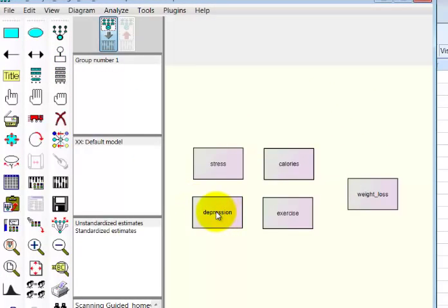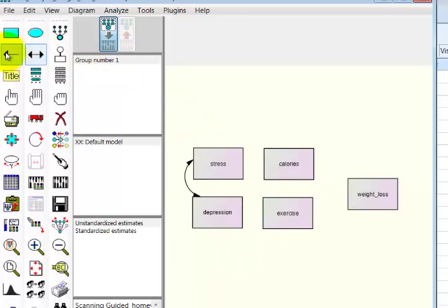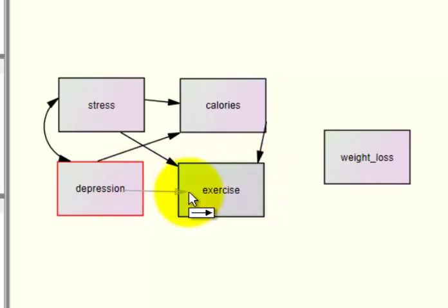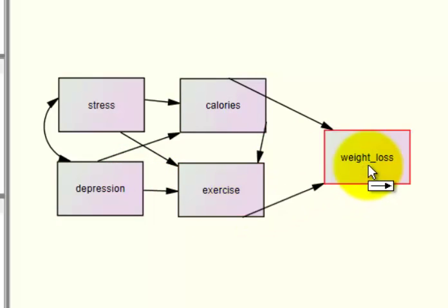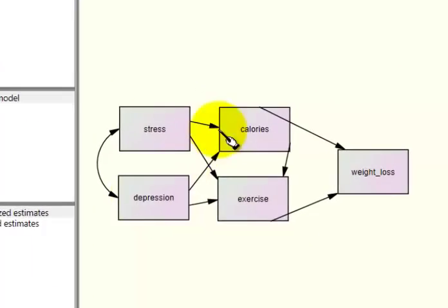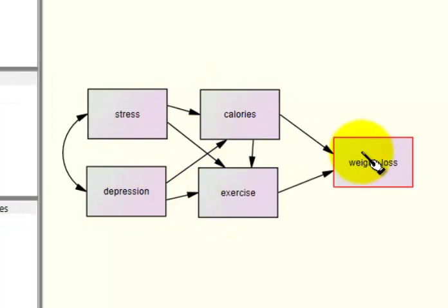Now we put in the arrows. The two-headed arrow is for correlation — you click the bottom one first, and when it turns red it's activated. We've got our correlation in. Next, we put in our one-way arrowheads — these will be our path coefficients or beta weights: stress to calories, stress to exercise, depression to calories, depression to exercise, calories to weight loss, and exercise to weight loss. Then click the magic wand to clean up the layout.